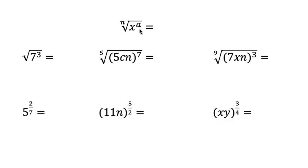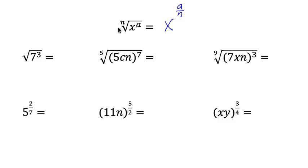Now, when we have an exponent inside the radical, we can incorporate that in the rational exponent also. The nth root of x to the a power is the same as x to the a over n power. Notice that the root number is still in the denominator, and now the exponent is in the numerator instead of a 1.